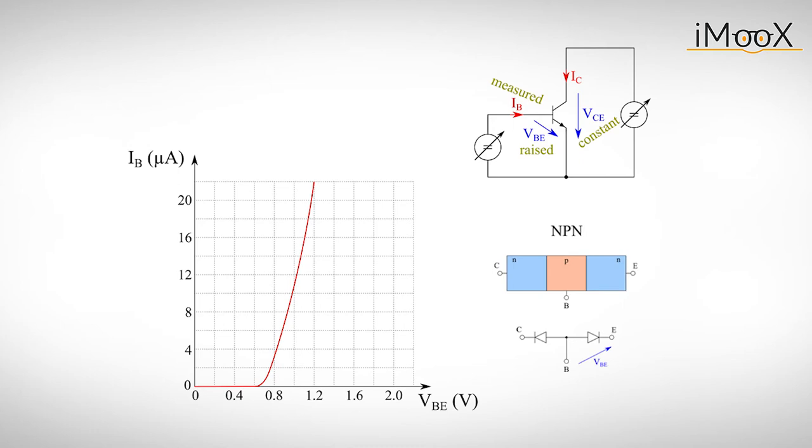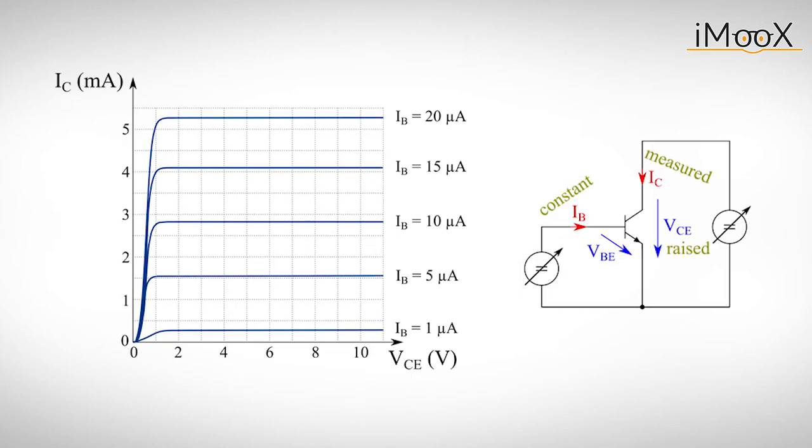If we do the measurement again for different positive values of VCE, we will see not much difference in the behavior. If we also measure the collector current IC for different values of the collector emitter voltage VCE, we can determine another function called the output characteristic of the transistor.